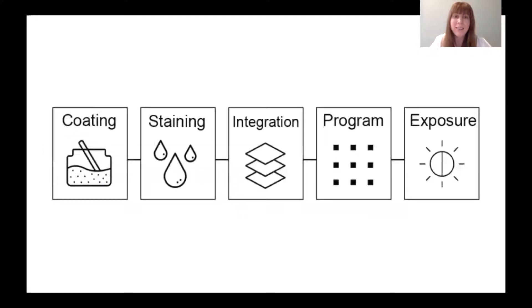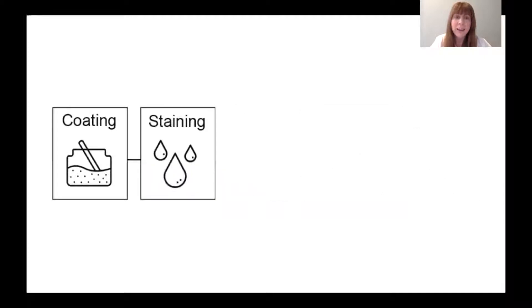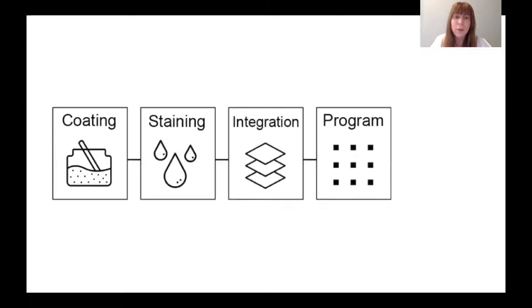Creating a self-destaining textile takes five steps: coating, staining, LED integration, programming the textile, and light exposure.